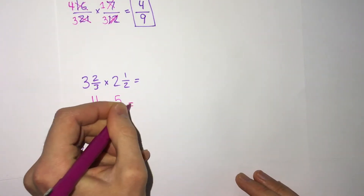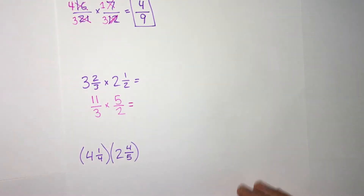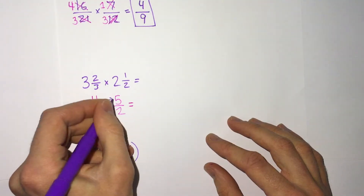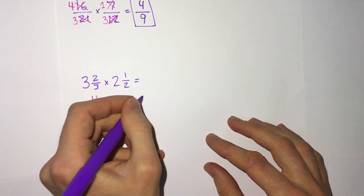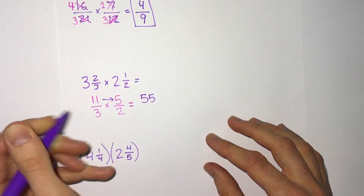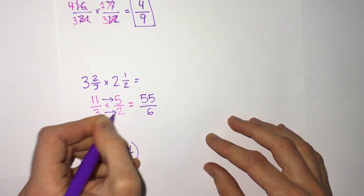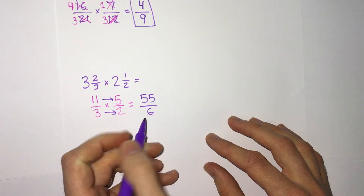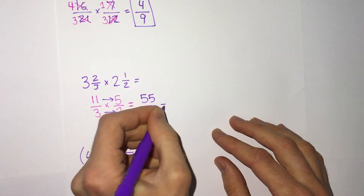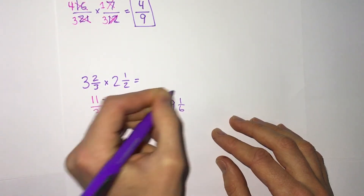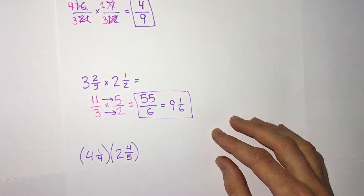We can't simplify anything here, but that's okay — we just know our answer should be simplified as well. So multiply across: 11 times 5 is 55, 3 times 2 is 6. We get 55 sixths. That can be our answer, or we can change it to a mixed number: 9 and 1 sixth.